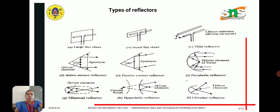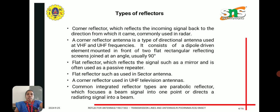These are the types of reflectors: large flat sheet reflectors, corner reflectors, hyperbolic reflectors, and circular reflectors. We are going to discuss about the parabolic reflector. The corner reflector, which reflects the incoming signal back to the direction from which it came, is commonly used in radars.